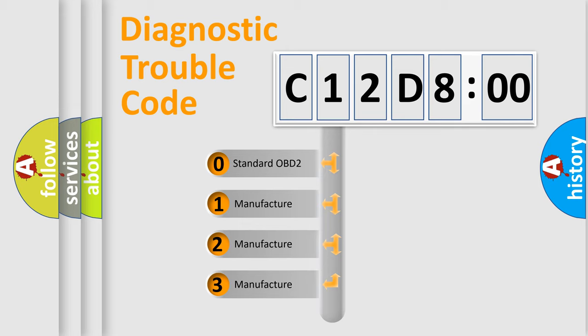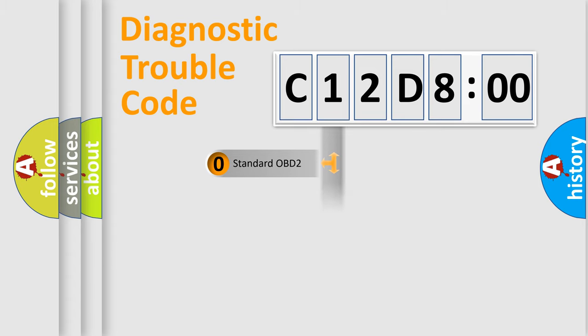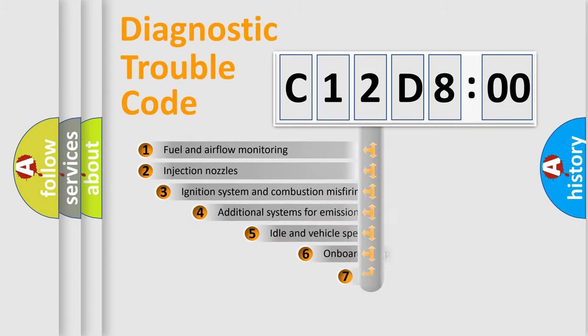If the second character is expressed as zero, it is a standardized error. In the case of numbers 1, 2, 3, it is a manufacturer-specific expression of the car-specific error.